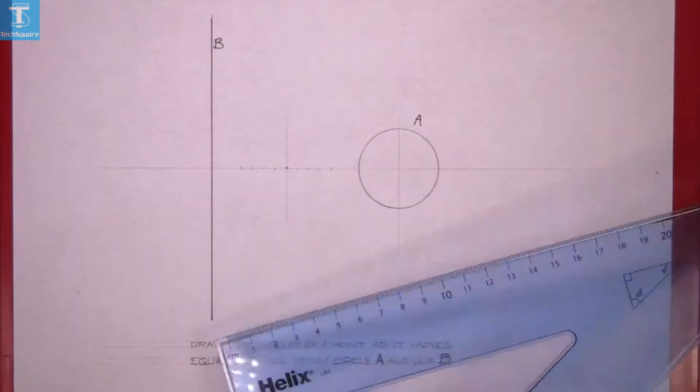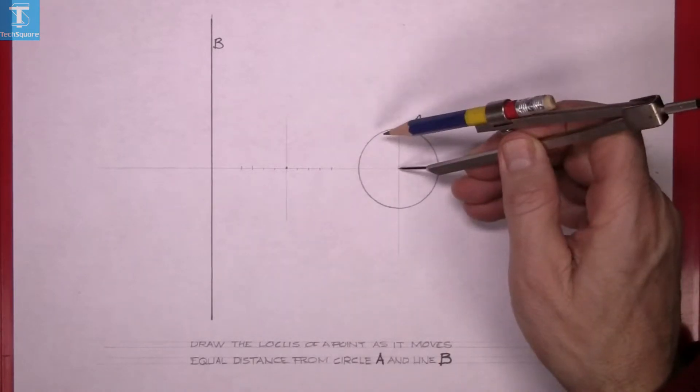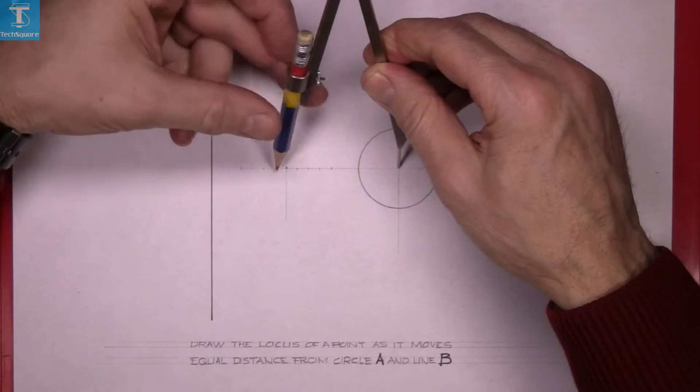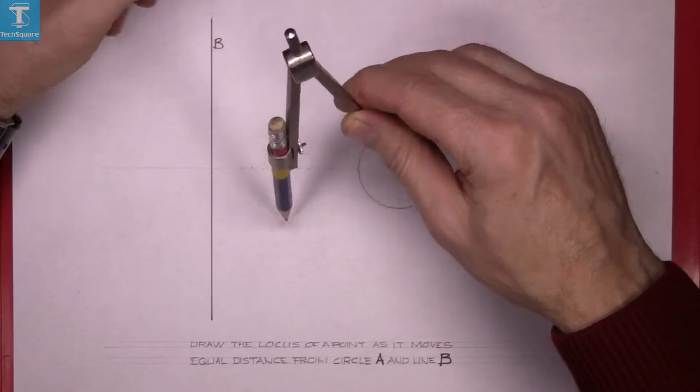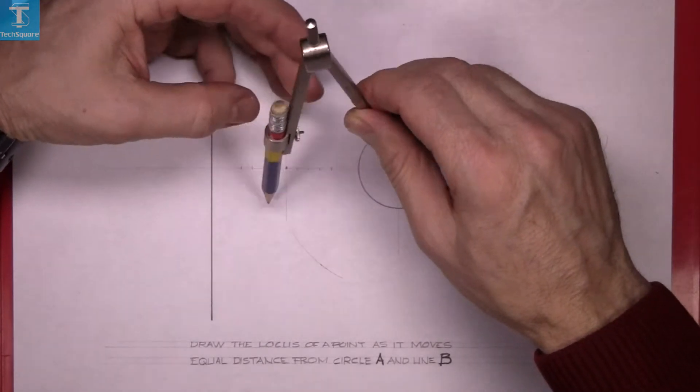Now set the compass from the center of the circle to the midpoint and then one past it, and draw your arc. Do the same for each of them.